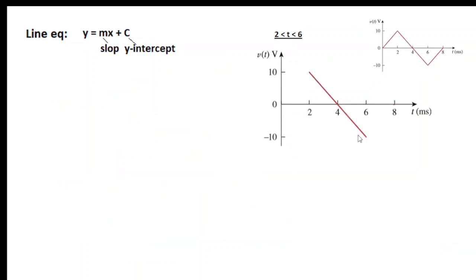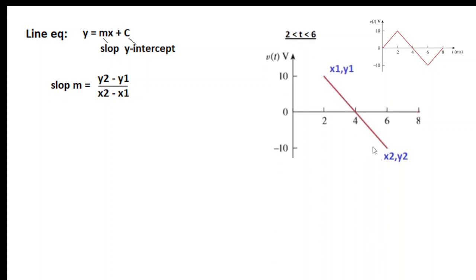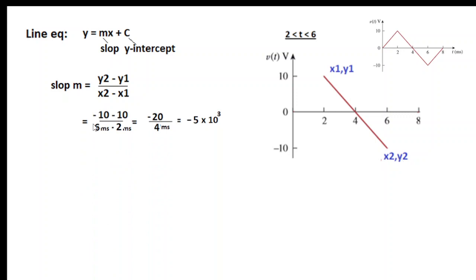Similarly, we write the equation for the second part using the same technique. We define the slope: the starting point is (X1, Y1) and the ending point is (X2, Y2). Putting in the values: Y2 is -10, Y1 is 10, so -10 - 10 over time 6ms - 2ms. That gives -20 over 4 milliseconds = -5×10³. So the slope is -5×10³.